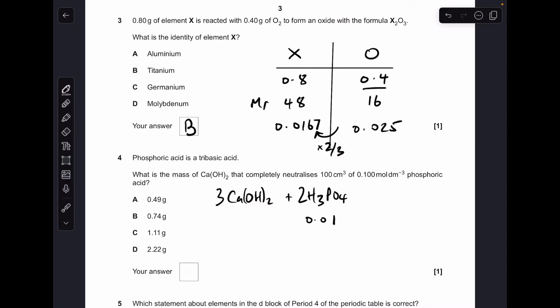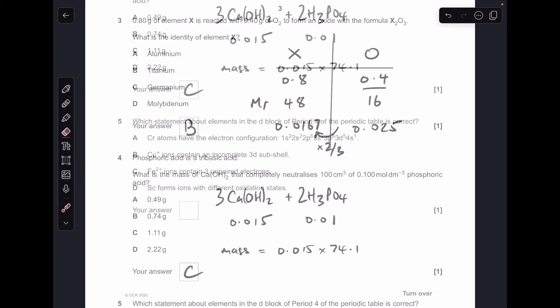So the moles of calcium hydroxide that you would need would be 3 over 2 times that, so that's going to be 0.015. And now we just need to convert those moles into grams. So the mass of Ca(OH)2 is moles times Mr, and when you put the numbers in, you get C as your answer.